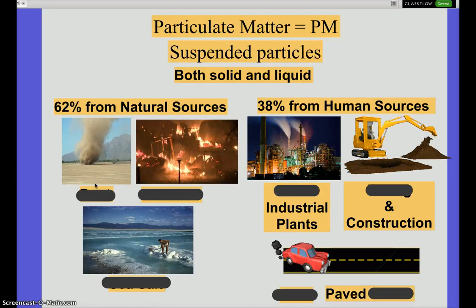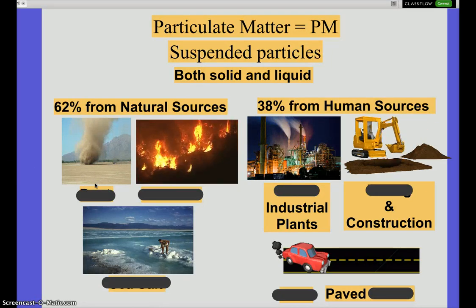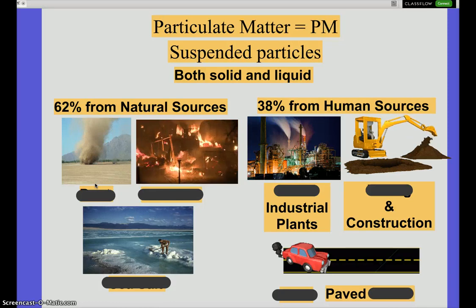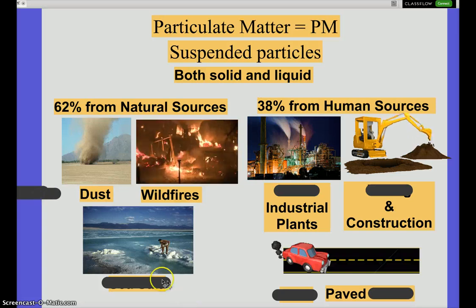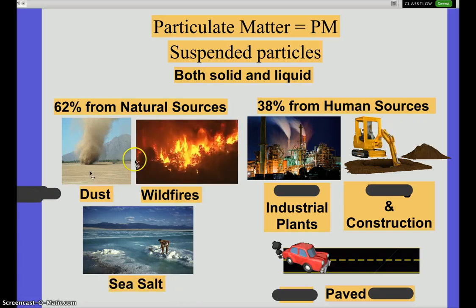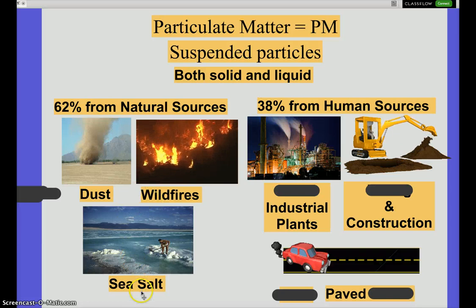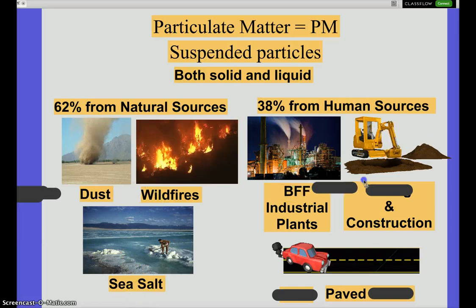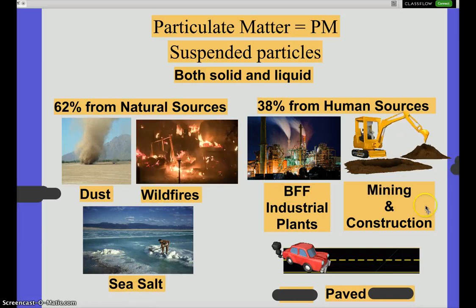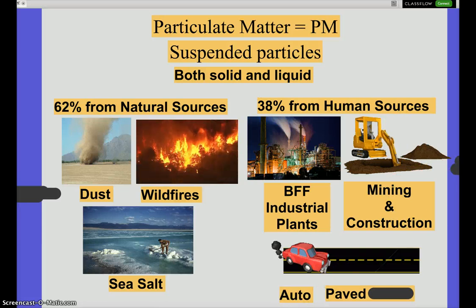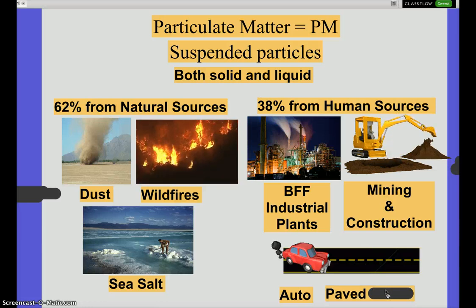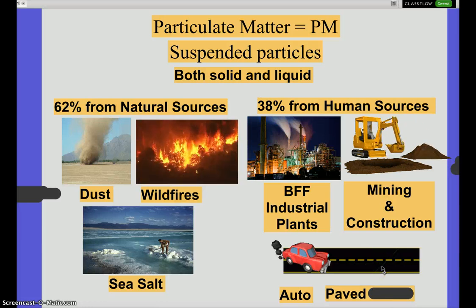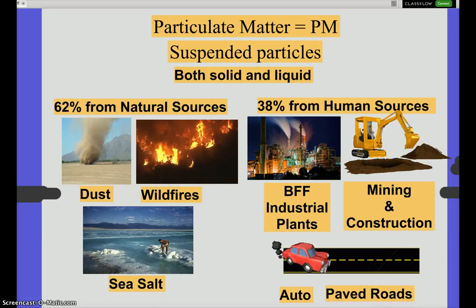Anything in the air that's not a chemical is particulate matter — like hair, fibers, dust. It comes from fires and many other sources. Natural sources include wildfires, dust, and sea salt. Human sources include industry, burning of fossil fuels, mining, and cars. Roads are also a contributor — cars constantly remove particles from road surfaces; a new black road turns gray within days from particle loss.